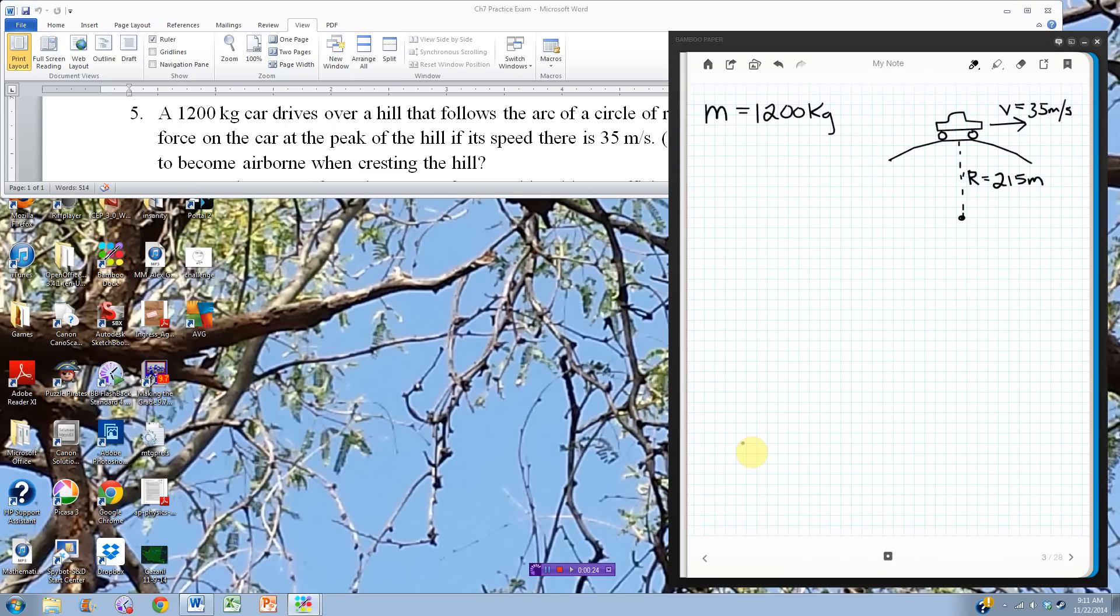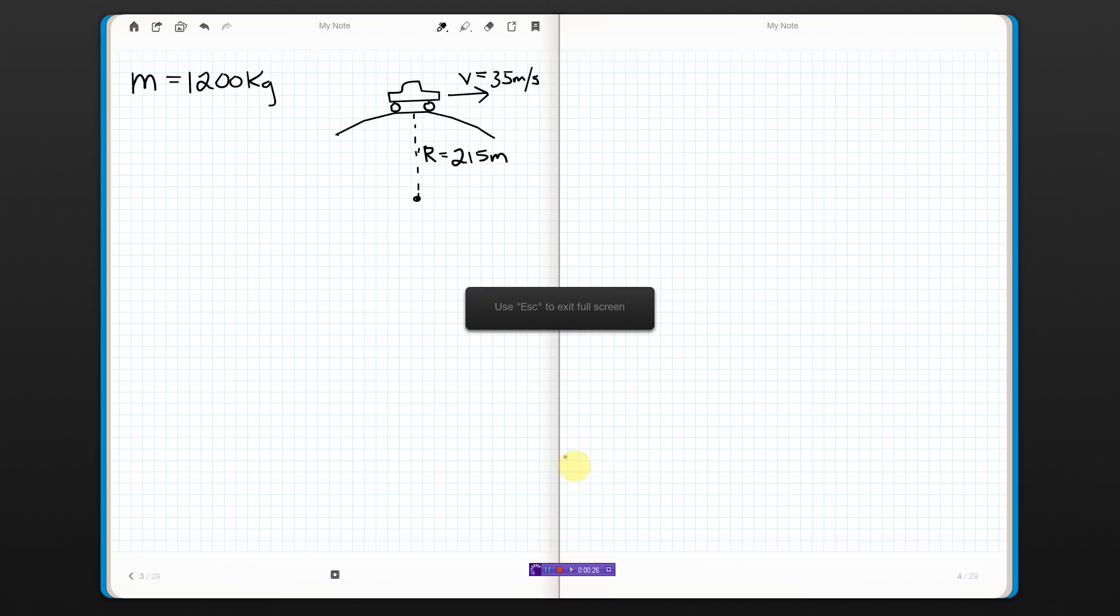Don't do that by the way, that's a bad idea. So I drew a little picture: car's going over a hill, that hill is part of a circle of radius 215 meters. At the top it has a velocity of 35 meters per second for part a.